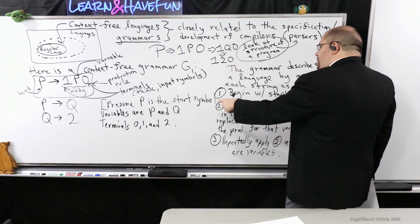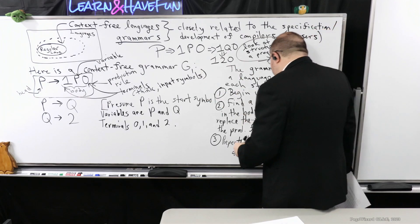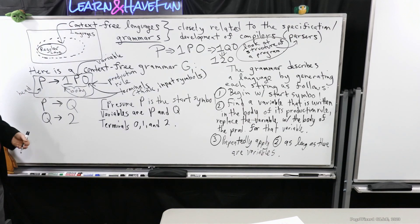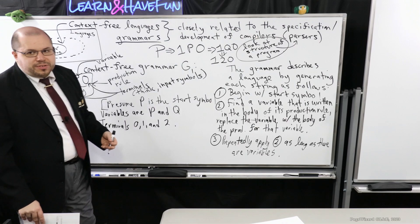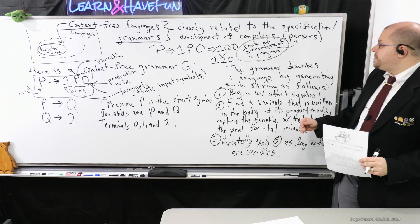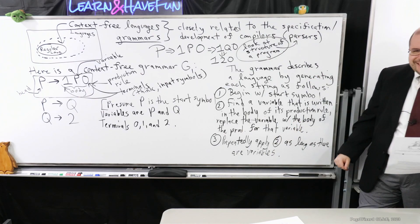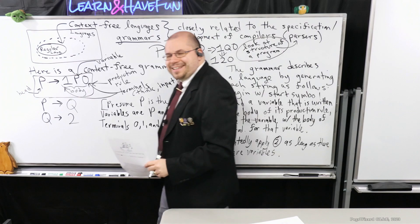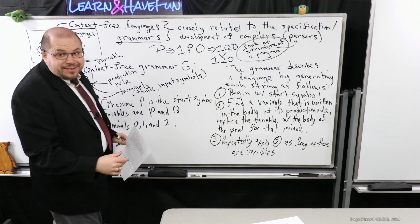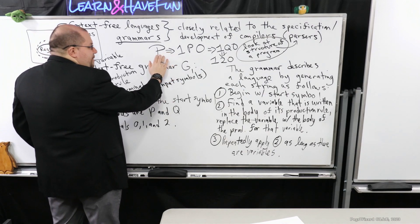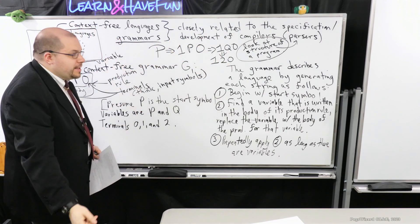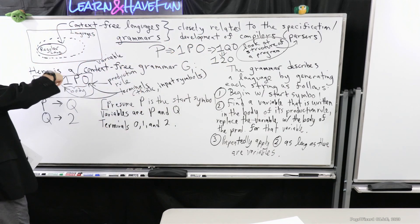The string 1 2 0 doesn't have any variables in it anymore—it's just terminals. So do I stop this process now? Yes, we're done! Notice I just have 1 2 0. This is an example of a string that is generated by this grammar. Notice how I could have gotten a different string by applying the production rules differently.